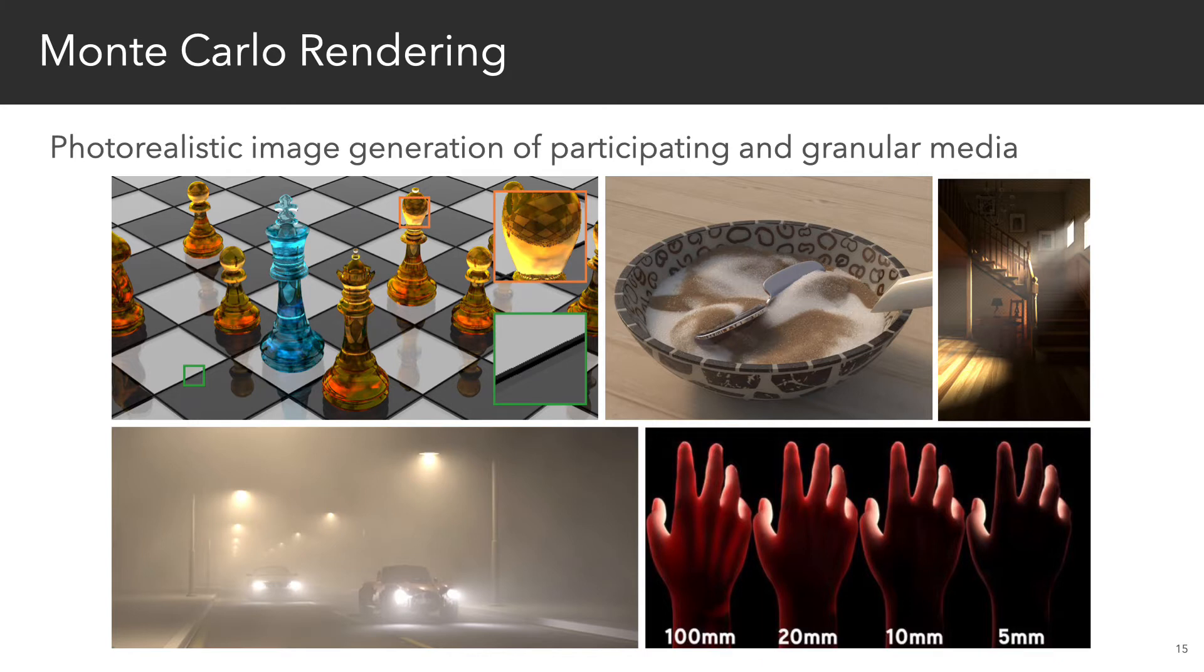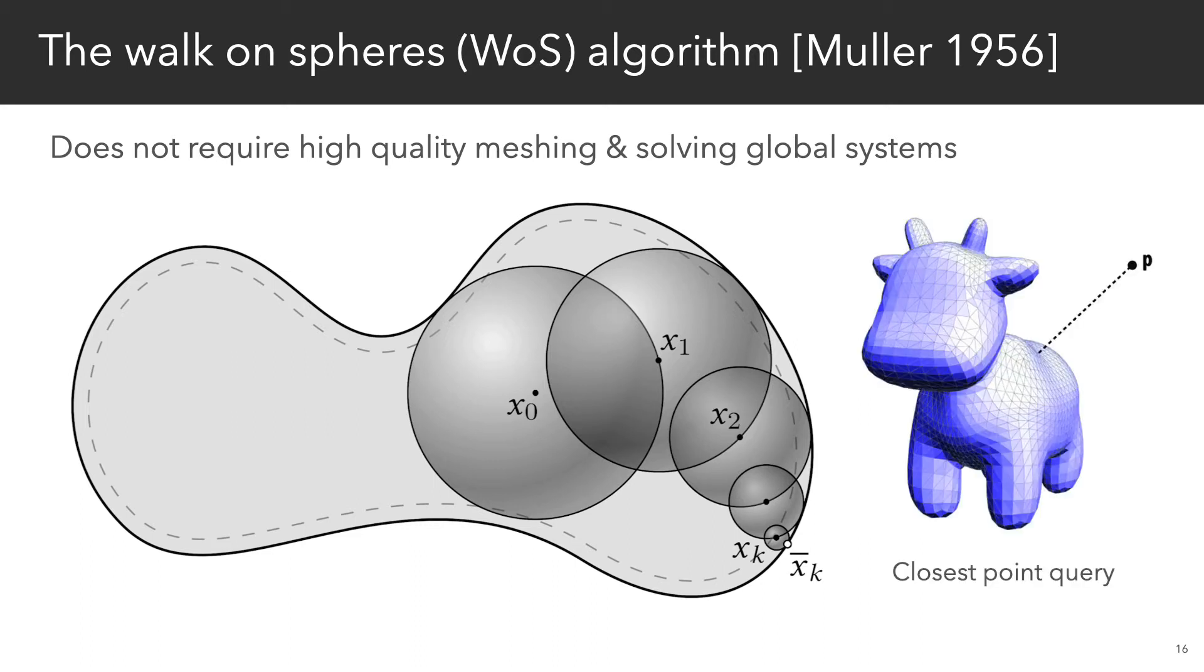So what about PDEs? Here there's a little known algorithm called walk-on spheres, which avoids spatial discretization altogether. Much like rendering, it only needs access to a single geometric kernel, namely closest point queries.